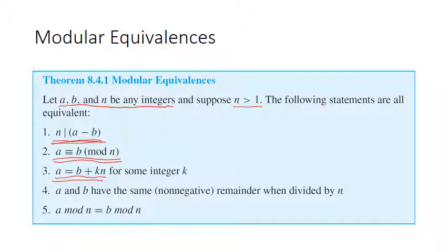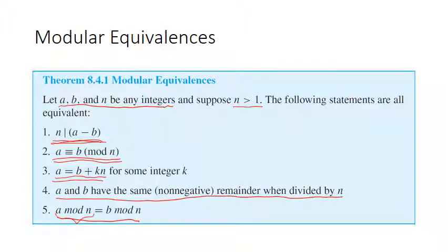Statements four and five say the same thing — five uses notation and four says it in English. Statement four says a and b have the same non-negative remainder when divided by n. Statement five says the same thing: a mod n equals b mod n, where a mod n is the remainder when you divide a by n, and b mod n is the remainder when you divide b by n.